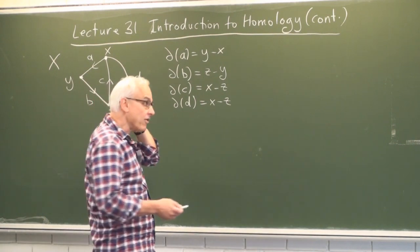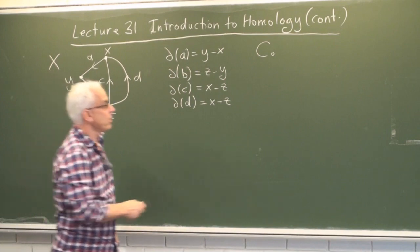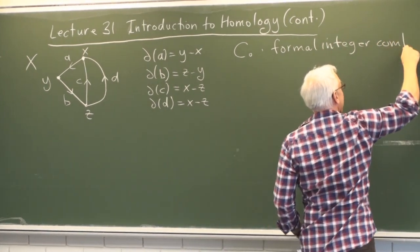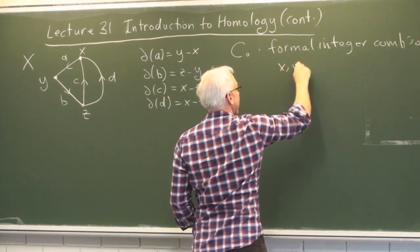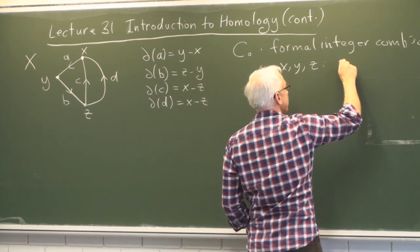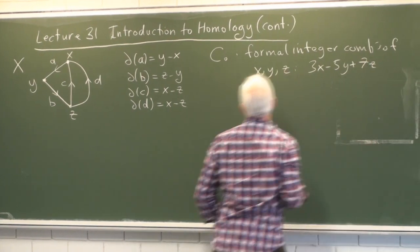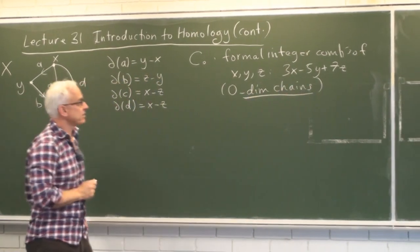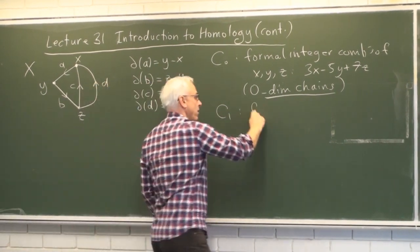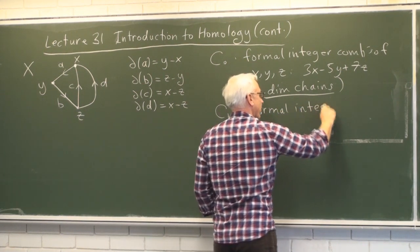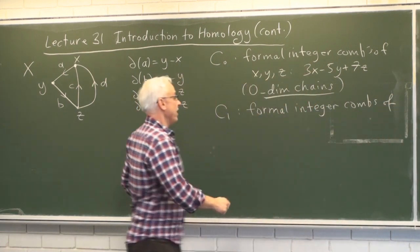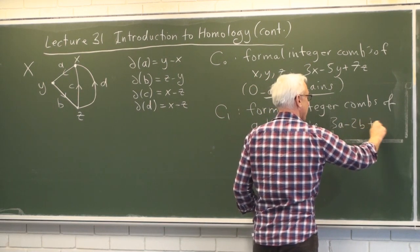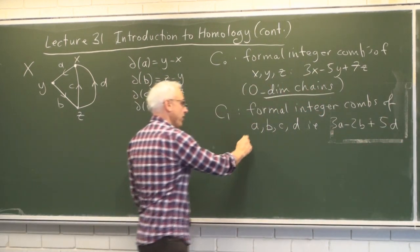We're working in an algebraic framework where we have the group C0, which consists of formal integer combinations of the vertices X, Y, and Z — things like 3X minus 5Y plus 7Z. These are called zero-dimensional chains. We also have one-dimensional chains: formal integer combinations of the directed edges A, B, C, and D — for example, 3A minus 2B plus 5D.